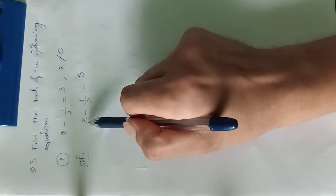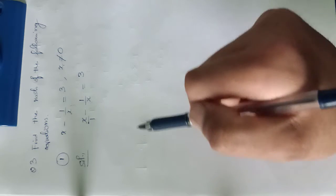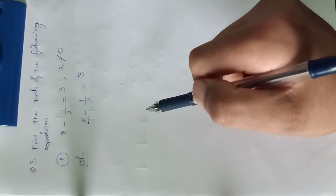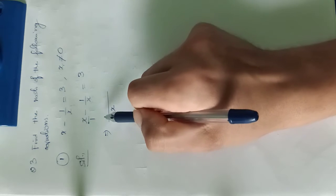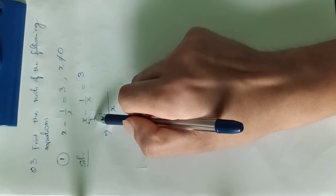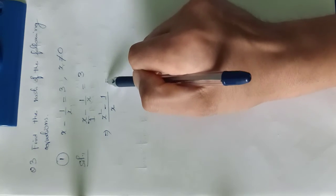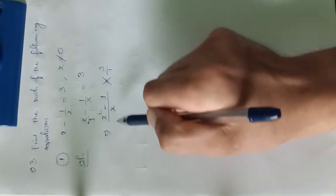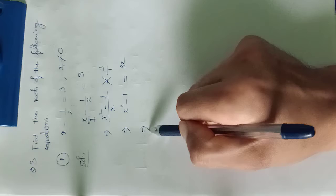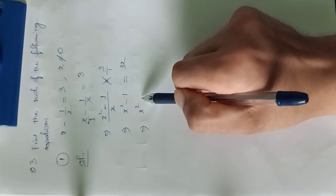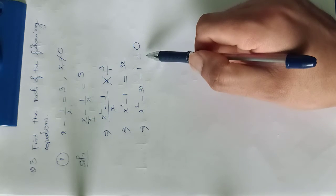The equation doesn't look like a quadratic equation, so we have to reduce it into a quadratic equation. We simply take the LCM and cross-multiply. The LCM of 1 and x is x. When we take LCM, x into x gives x², and the numerator from the second term is 1. Cross-multiplying: x² − 1 = 3x, which gives x² − 3x − 1 = 0. The given expression has now been reduced to a quadratic equation.